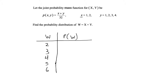When w takes on the value 2, that is possible only one way: when x=1 and y=1. Plugging 1 and 1 into the joint PMF gives us (1+1)/32 = 2/32. So P(W=2) = 2/32.